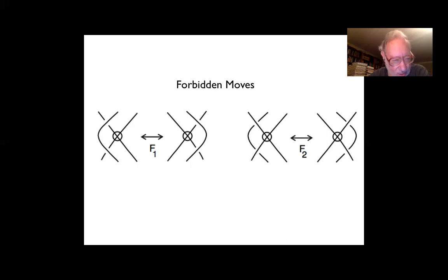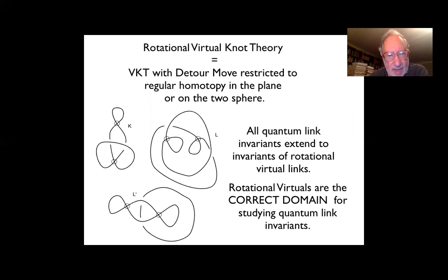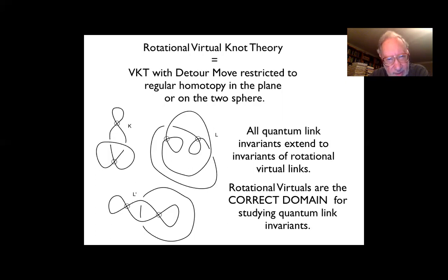Rotational virtual knot theory is special in that we do not allow the first virtual move — a little virtual curl is not allowed to be undone. Pictures like K, L, and L-prime on this slide all turn out to be non-trivial rotational virtual knots. K would be trivial if you could undo that curl, because then you could apply a Reidemeister two move and remove another curl, giving an unknot diagram.